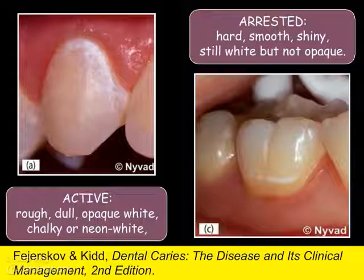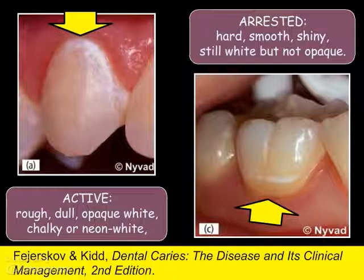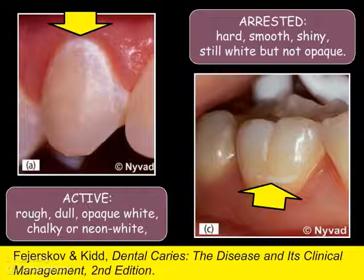Here is something else to notice. The lesion on the left is right along the gingiva, where plaque accumulates. On the right, there is quite a distance between the gingival margin and the lesion. Most likely, that gingiva used to be up near the lesion and plaque used to accumulate there. It may be years since that lesion has been active because it is so far away from the gingiva. So this is a scar of an old lesion that is now inactive.